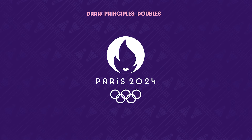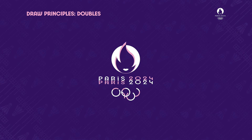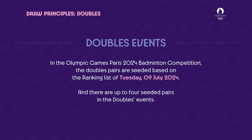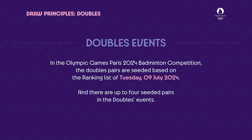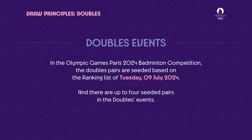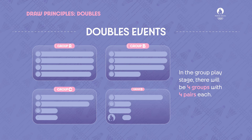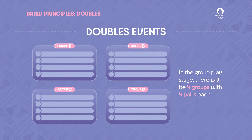In the Olympic Games Paris 2024 badminton competition, the doubles pairs are seeded based on the ranking list of Tuesday the 9th of July 2024. There are four seeded pairs in the doubles events. In the group play stage, there will be four groups with four pairs each.